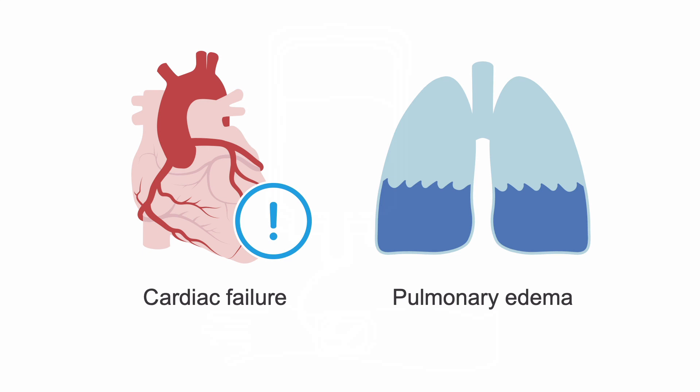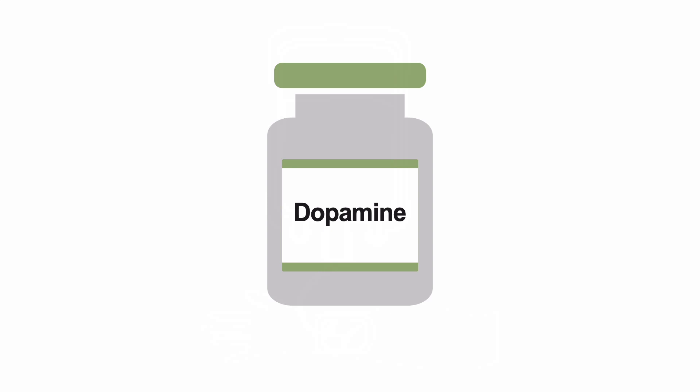Instead, if there is a poor response to fluid resuscitation, implement vasopressors to maintain a mean arterial pressure of over 90 millimeters of mercury. Dopamine is the vasopressor of choice because it has a long history of good efficacy, has some renal preservation characteristics, and its dosing is very well understood.